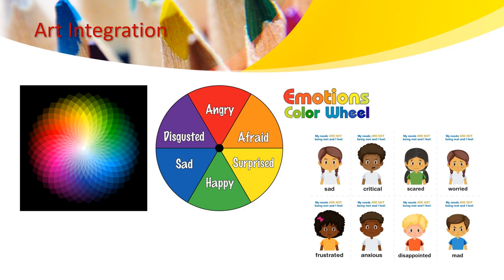As we talked previously about art integration, during this unit we will be talking about the color wheel and emotions, and how every emotion is connected to colors. If you are wearing a white t-shirt right now, what do you think you are feeling? Does your white t-shirt reflect what you are feeling? If you are wearing a red t-shirt, do you think you are angry, or is your t-shirt not reflecting what you are feeling?